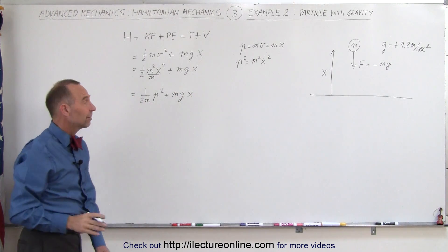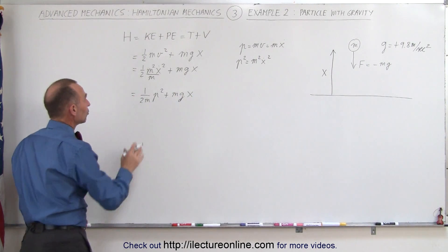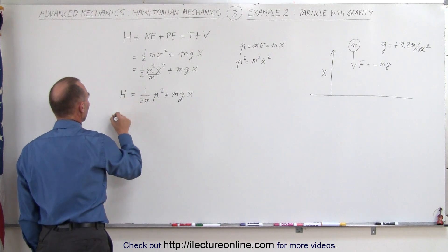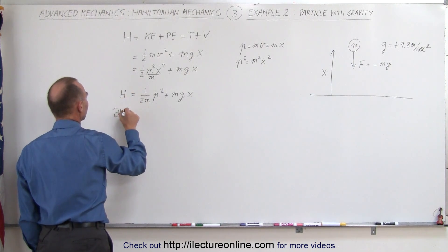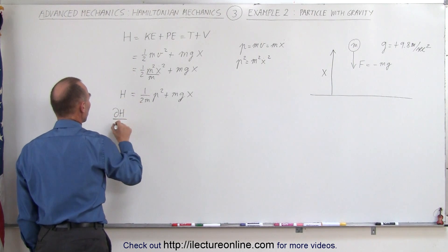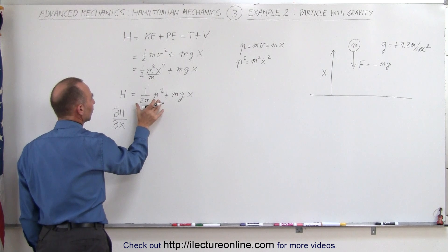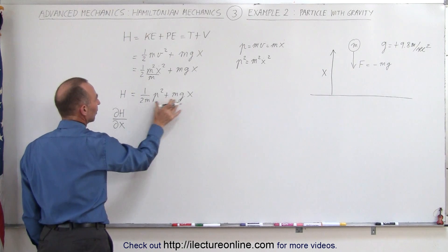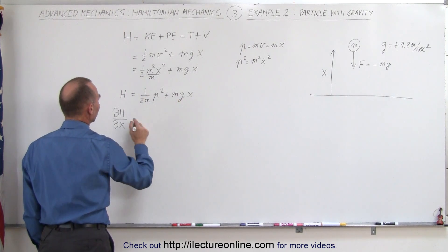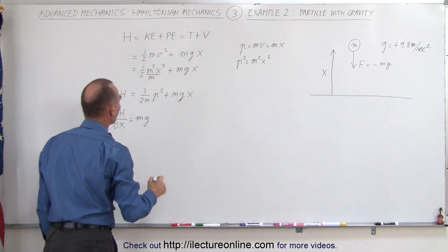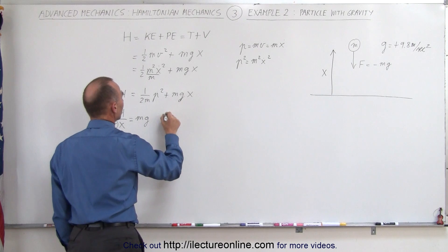What we're going to do next is take the partial derivative of the Hamiltonian with respect to x, which means the first term goes to zero, and here we simply get mg.